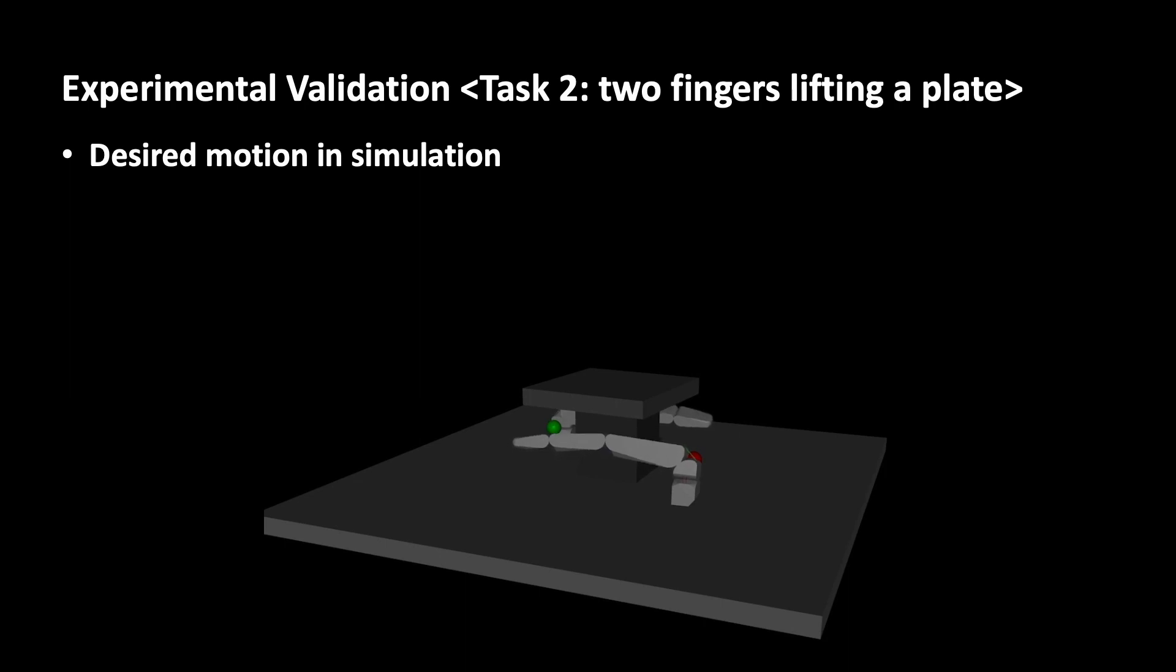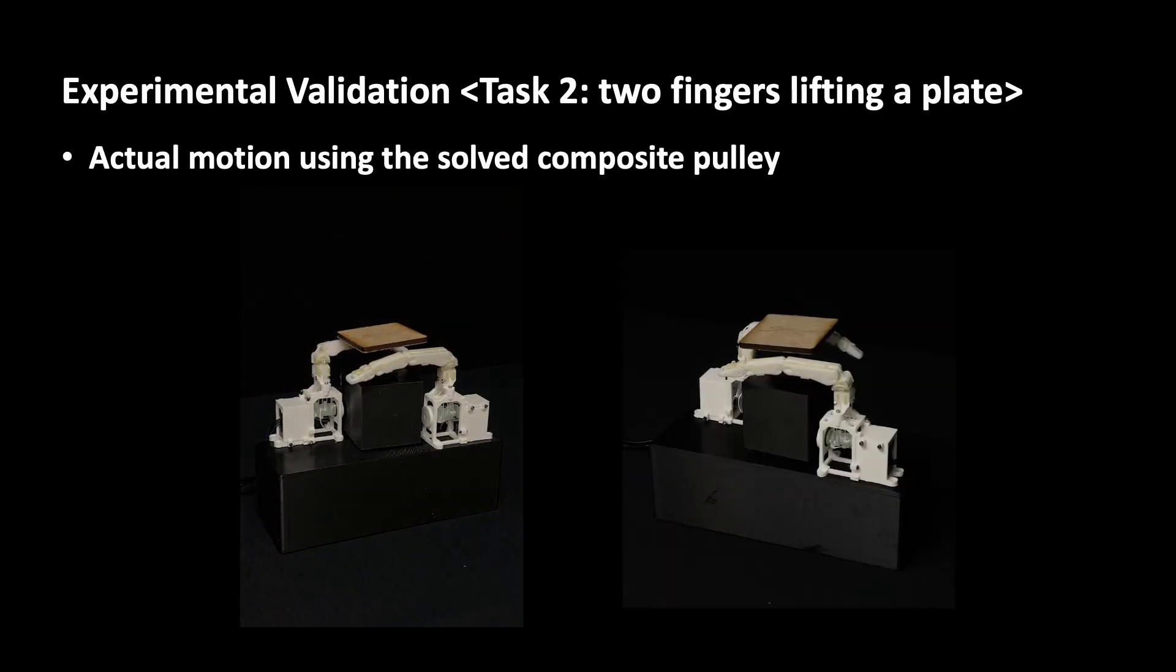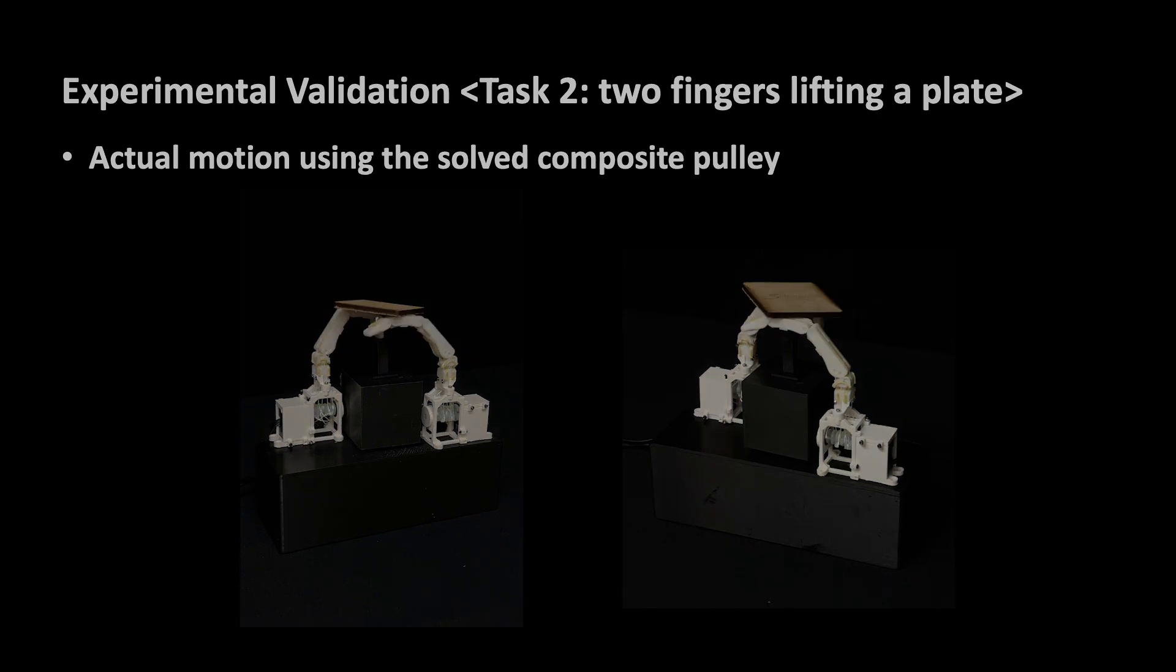In our second example, we record two fingers moving in coordination to lift up an object again in simulation. Similar to the previous experiment, we record the tendon length profiles and then use those to generate composite pulleys. The generated pulleys are printed and sampled to perform the task in real hardware as you can see here.